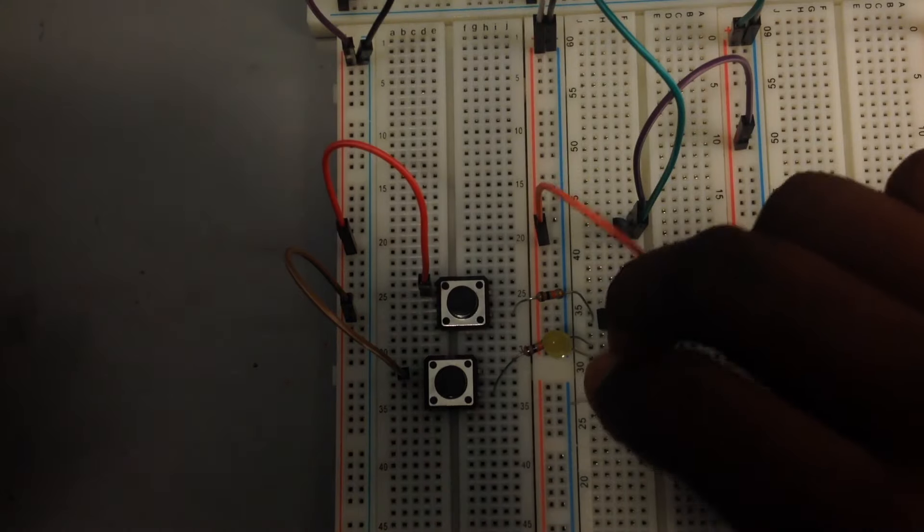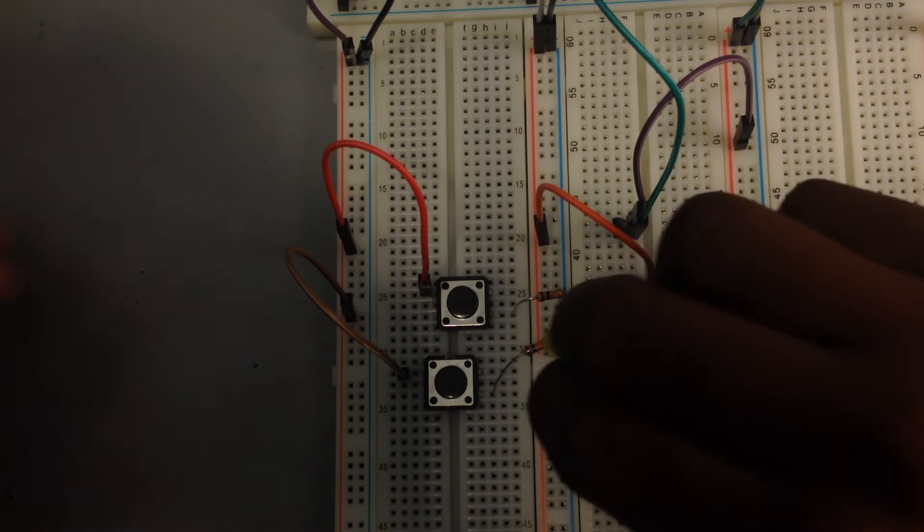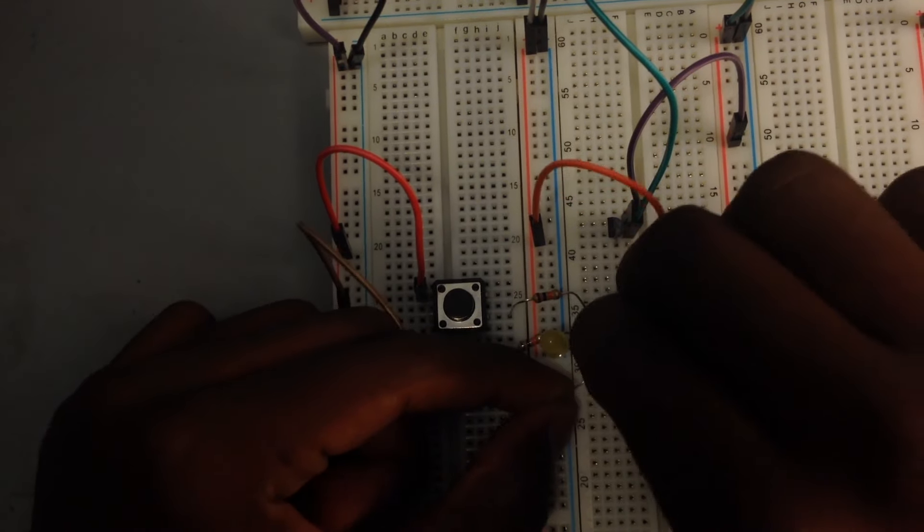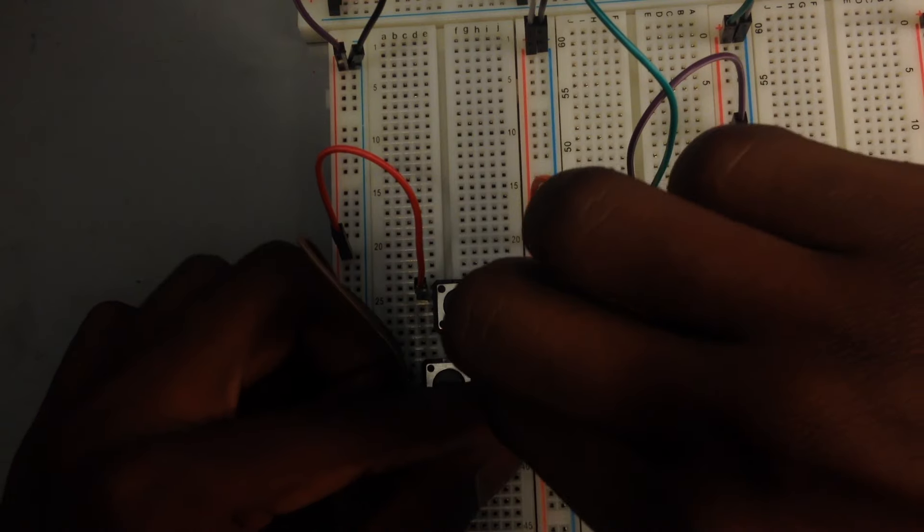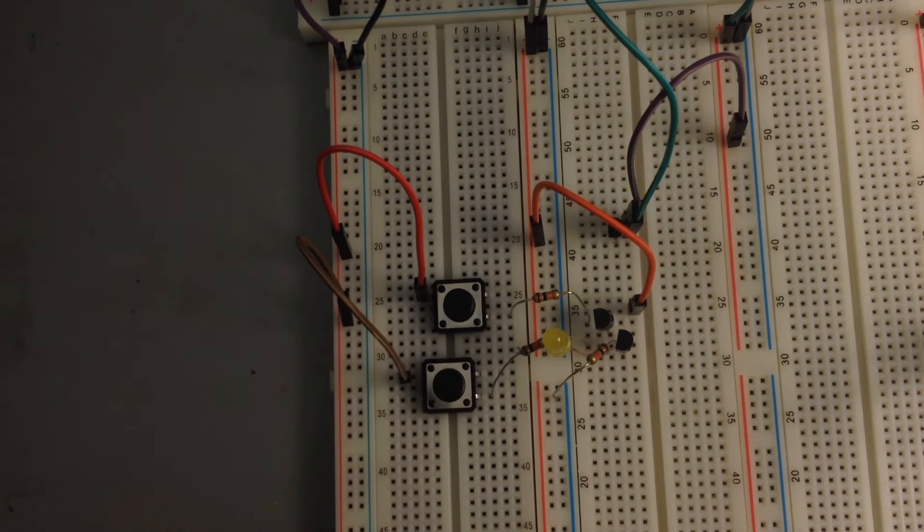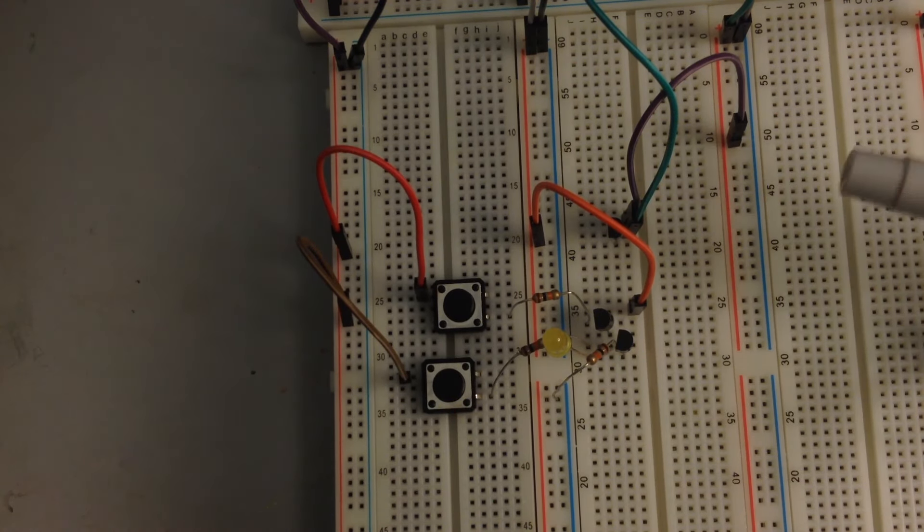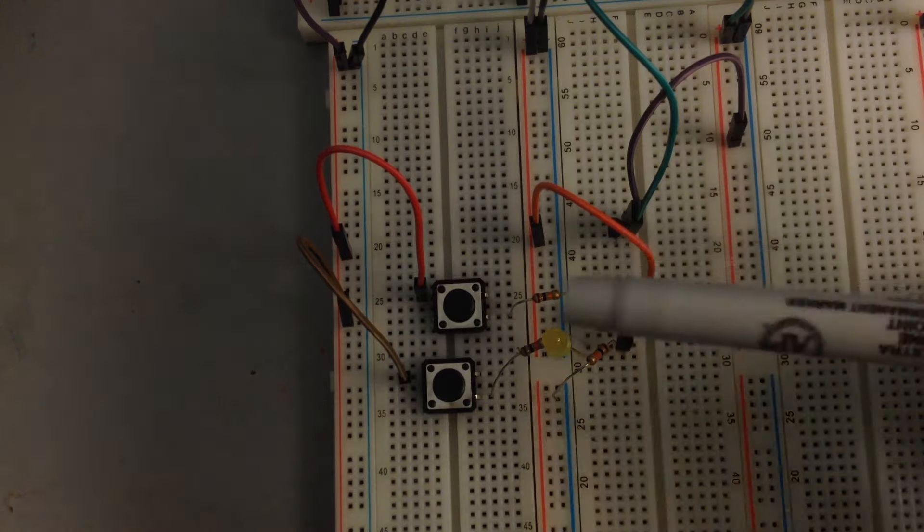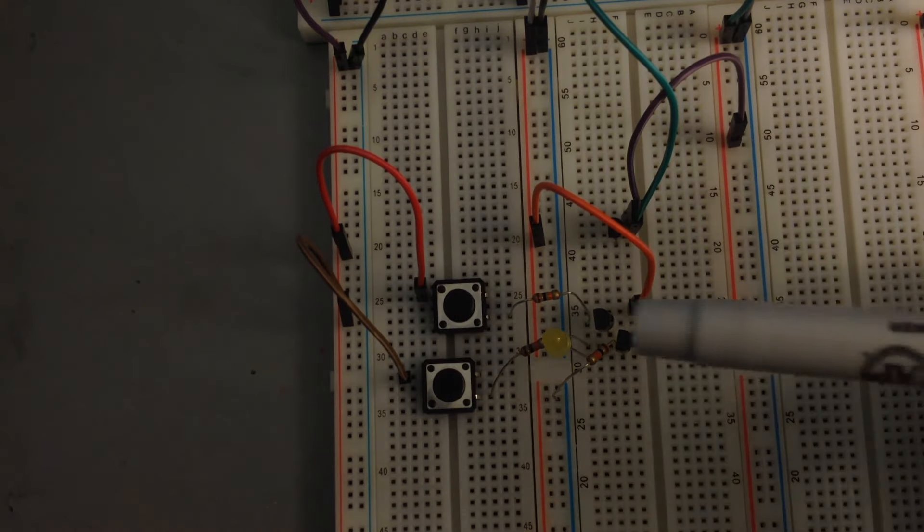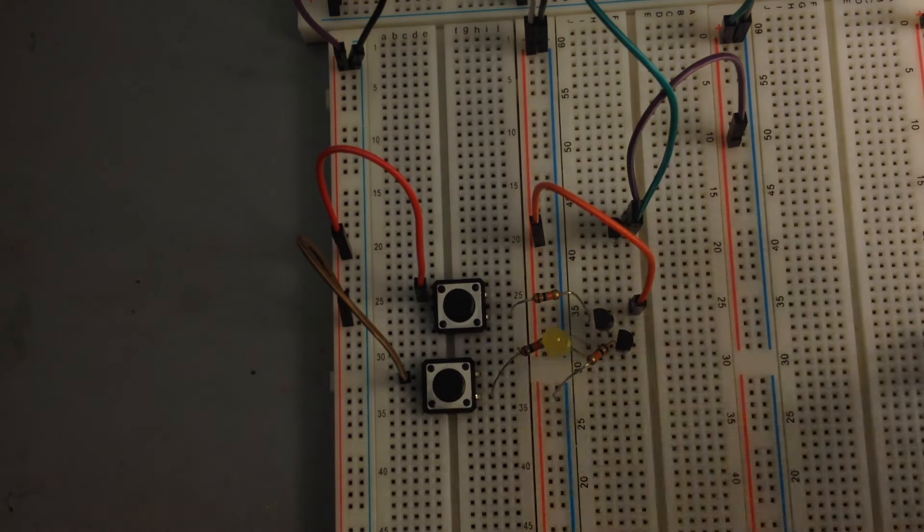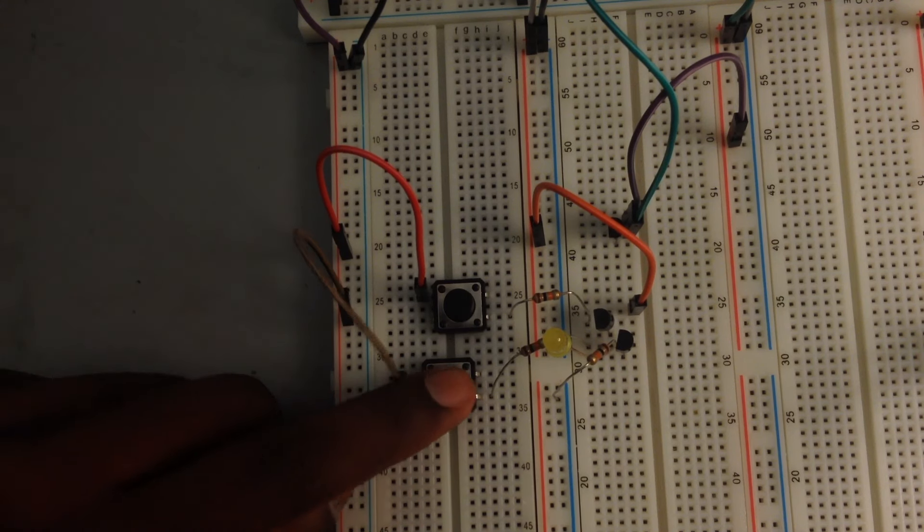So the way we fix it is by putting something called a pull-down resistor. And that means that from the output, we also put it going to ground. So usually you put a 4.7 or 6.7K resistor, a pull-down resistor. But here I'm just using 10K, it won't really matter. Not a big deal.